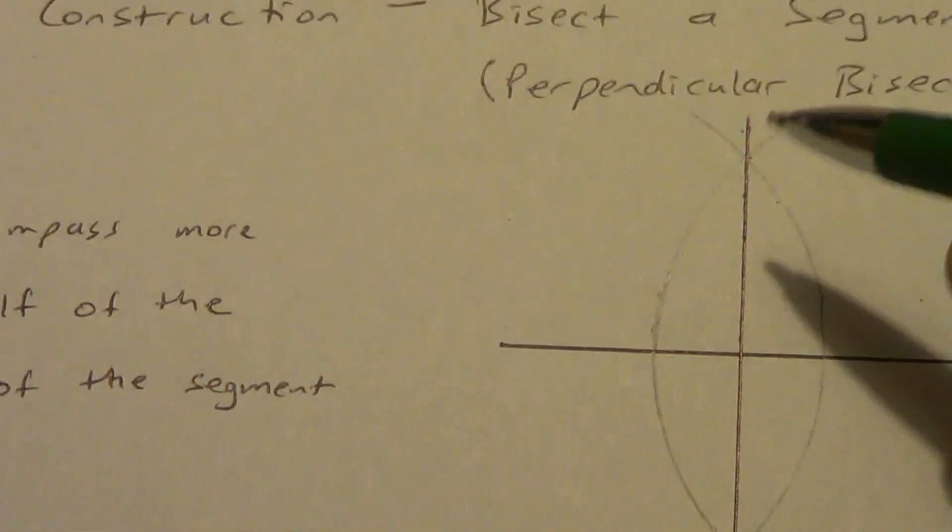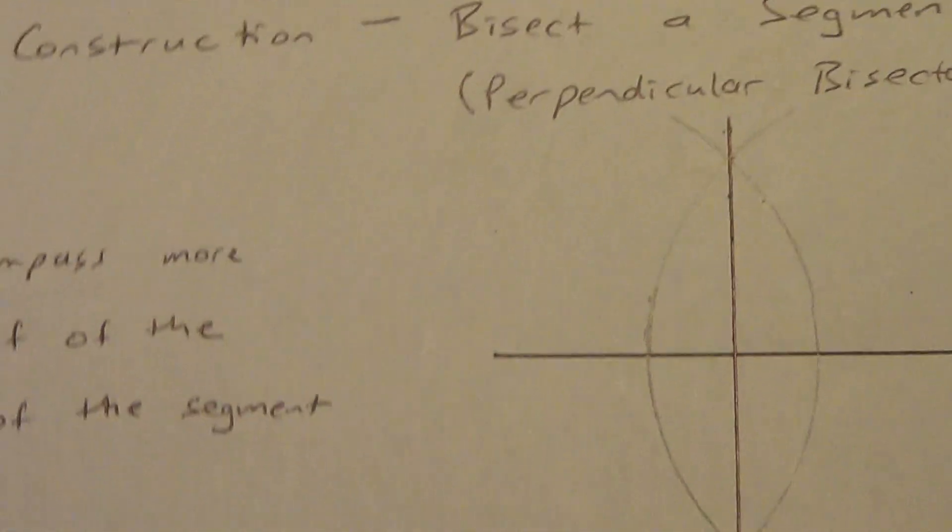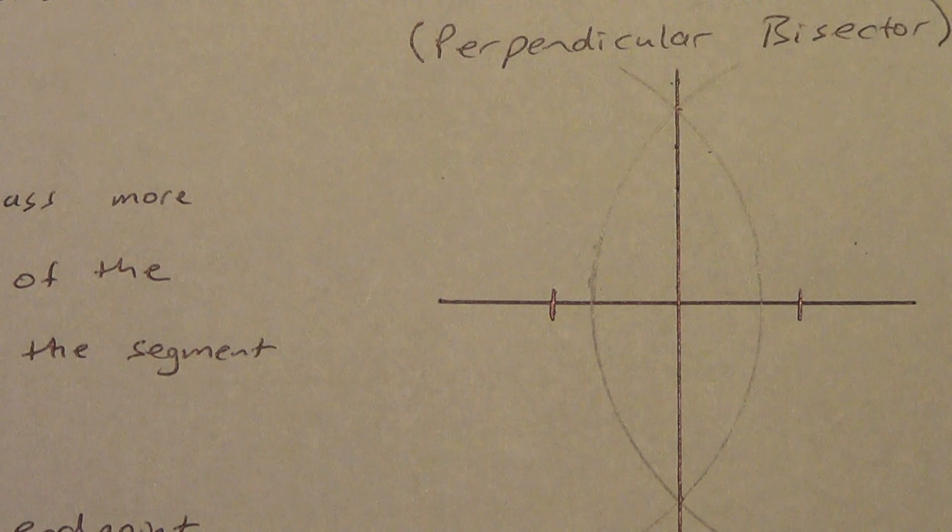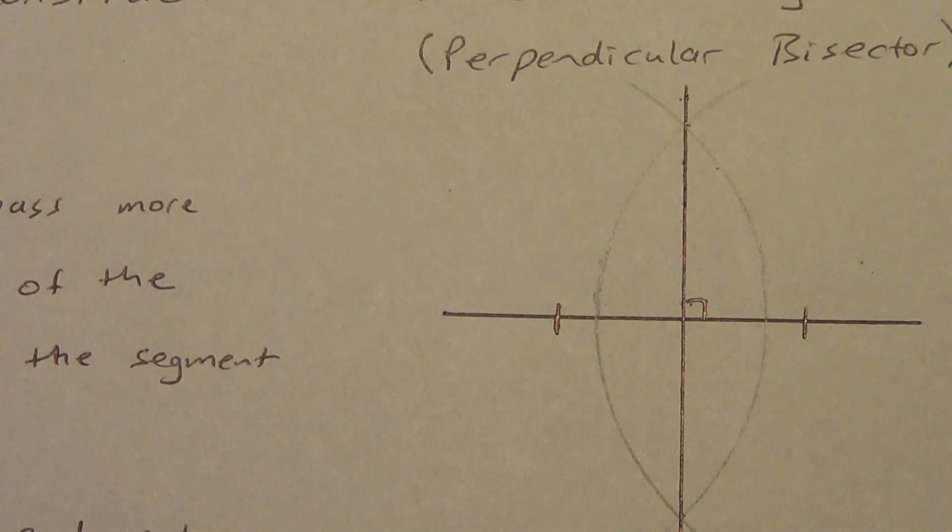Now I can draw that as long as I want, that line going there. But what's important, remember, bisect means to cut into two equal pieces. So this side over here is congruent to that side over there. And it's perpendicular. It forms a right angle. Perpendicular bisector.